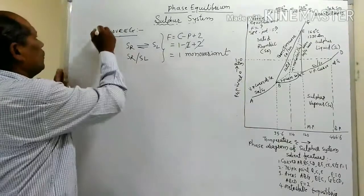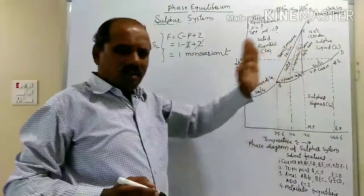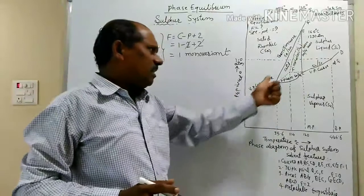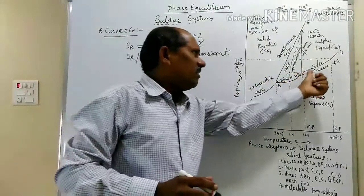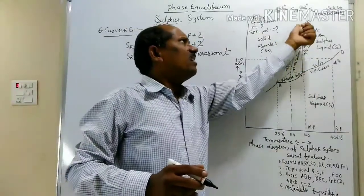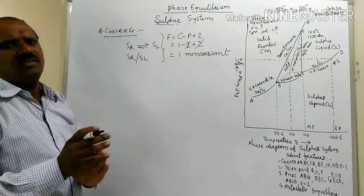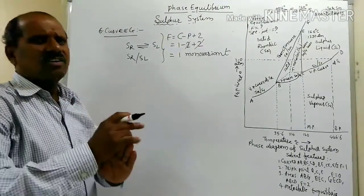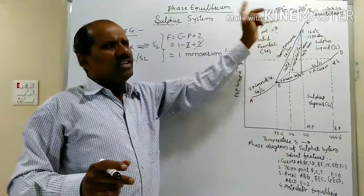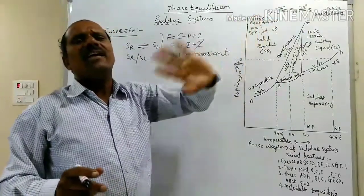In this way, all six curves have been explained: curve AB, curve BC, curve CD, curve BE, curve CE, and curve EG — each characterized by its name, the two phases in equilibrium along it, the degree of freedom, and any special point regarding that curve.